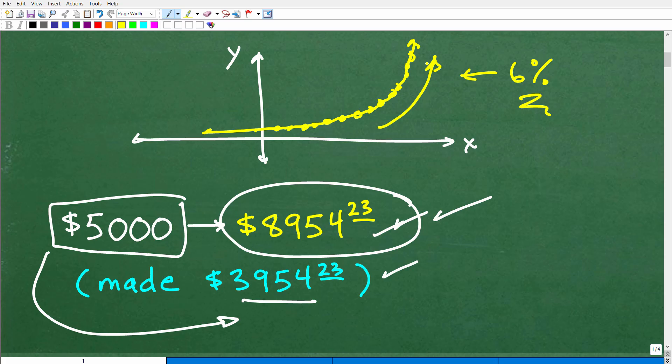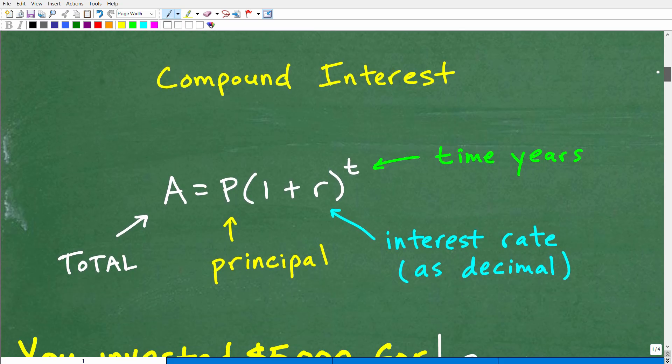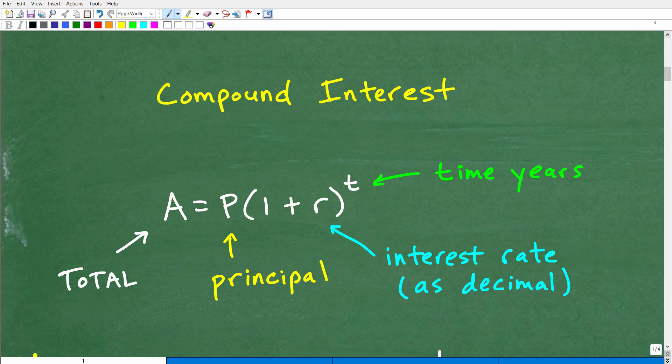This is a much bigger topic in mathematics, exponential growth and decay, which of course compound interest is a part of. But I just want to make sure you understand why compound interest is so powerful. So let's go ahead and get into the specifics of this problem. We have to talk about compound interest and we need a formula. So there are different formulas, a few different variations of formulas for compound interest. There's something called continuous compound interest. We're not talking about that. We're talking about compound interest, annual compound interest.